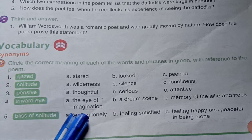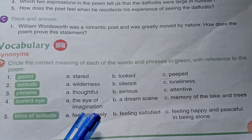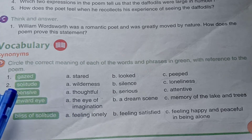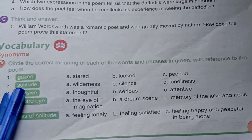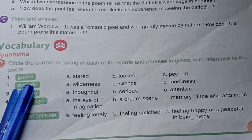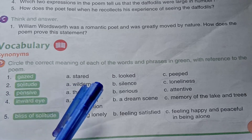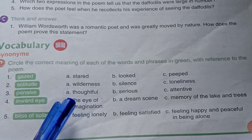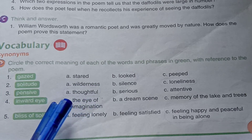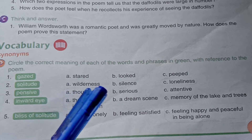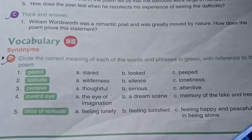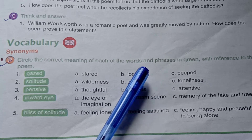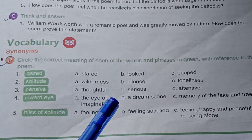The three options are: steered, looked, peeped. I will do one for you. The correct meaning of 'gazed' is 'looked.' So you have to circle this word — circle the word 'looked' like this.